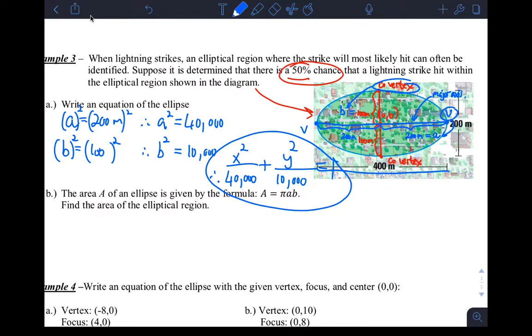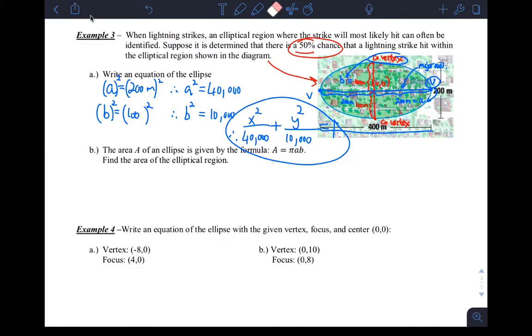And then find the area that's kind of a simple little thing. Once you have the equation, they're just saying the area is pi times a times b. So we have a, we have b. We've already found those. So the area is just pi times a, which is 200, times b, which is 100. And you write that properly, times 100. Which is, if you do that on your calculator, about 62,831.8 meters squared. That's the area.